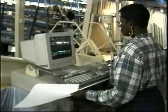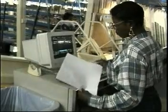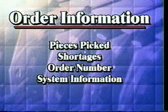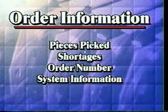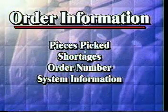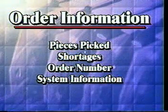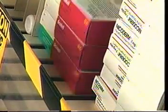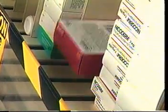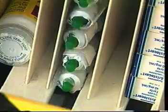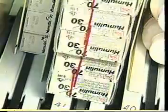System operators have access to order information such as pieces picked, shortages, order number, and other information displayed on system monitors. Dispensamatic can automate the selection of a wide variety of products and packaging configurations such as plastic containers, tubes, shrink or blister wrapped multi-packs, and cartons.